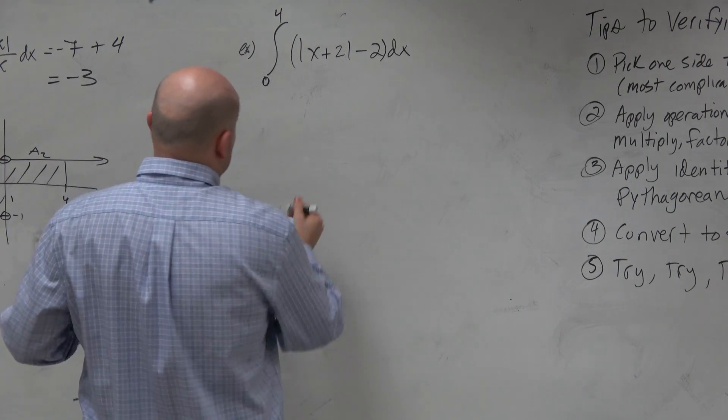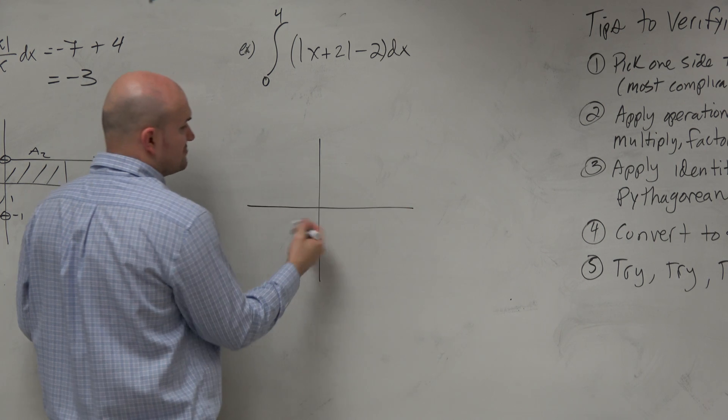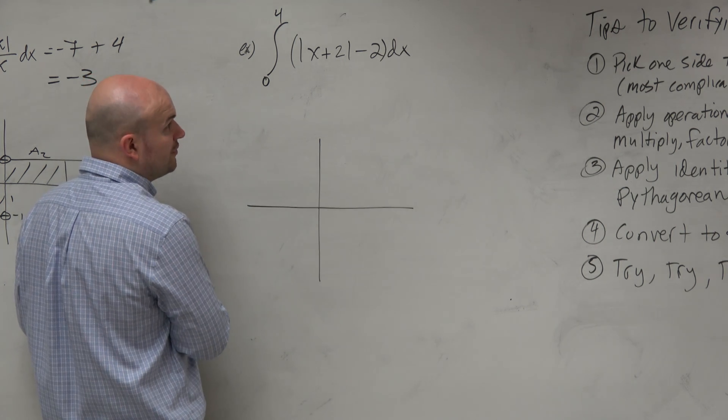This function looks like... So here we have a horizontal shift and a vertical shift. We know the parent graph is at 0, 0 with a slope of 1 over 1.